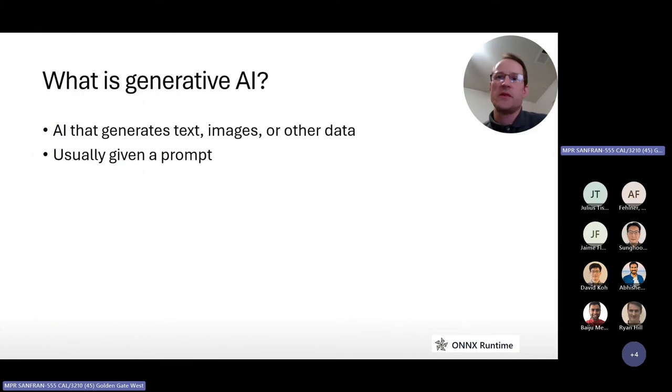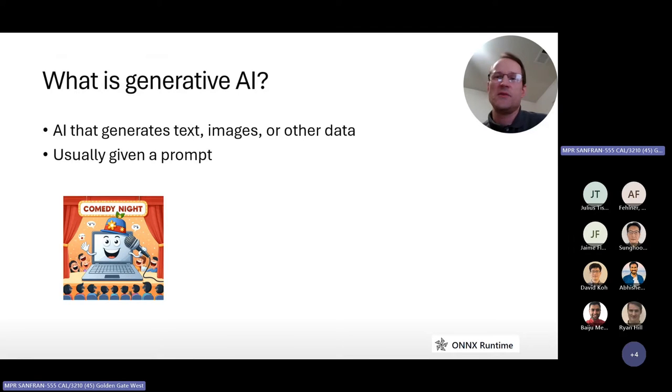So what is generative AI? It's basically AI that generates text, images, or other data, usually given a prompt. For example, I used the Bing AI to generate an image, and the prompt I gave it was, draw a computer or laptop doing stand-up comedy.